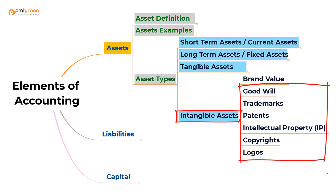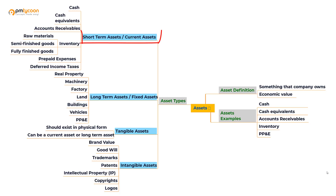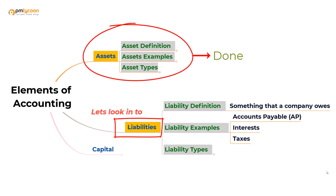Goodwill, trademarks, patents, intellectual properties, copyrights, and logos are all examples of intangible assets. That brings us to the end of the assets category. We have discussed current assets, fixed assets, tangible assets, and intangible assets. Now let's move on to liabilities.